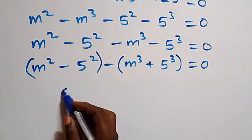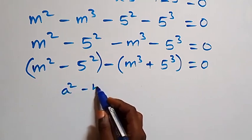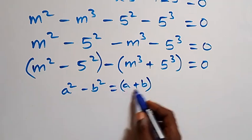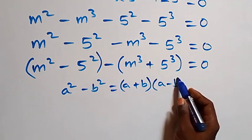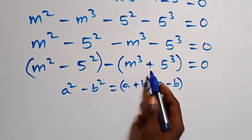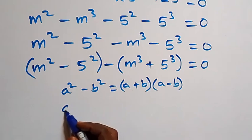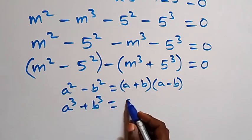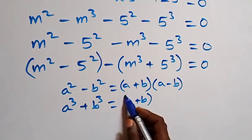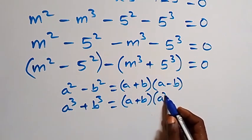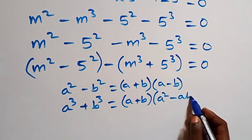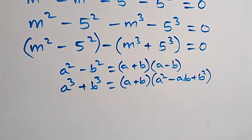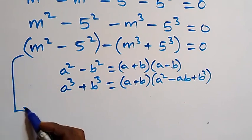The first term follows from the identity a squared minus b squared equals (a plus b)(a minus b). The second term follows from a cubed plus b cubed equals (a plus b)(a squared minus ab plus b squared).